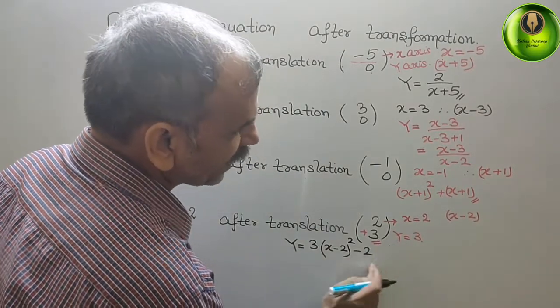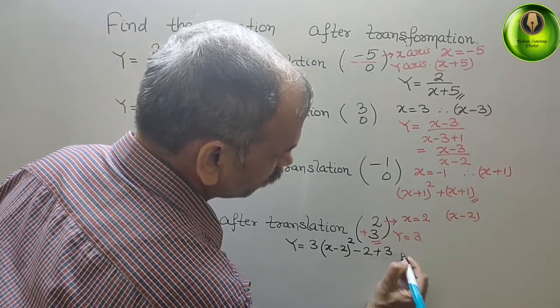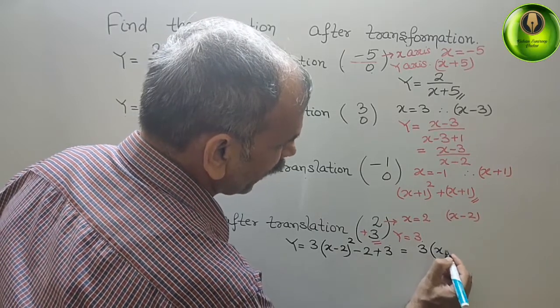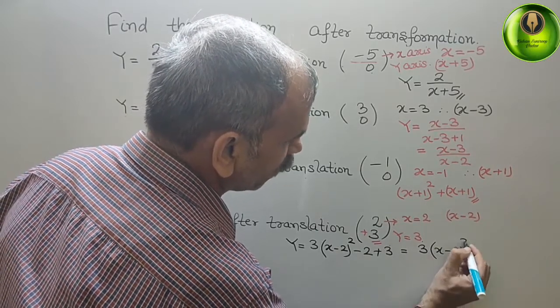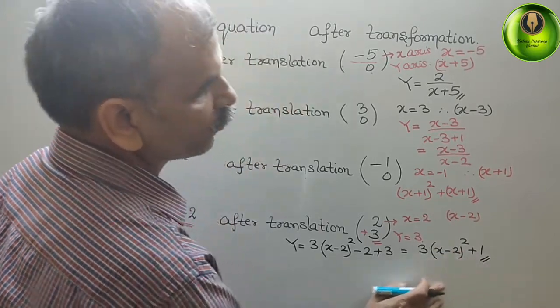And in y, again they have given 3 also. That means plus 3. So therefore, this is nothing but your 3 times x minus 2 whole squared plus 1. So this is the value for that.